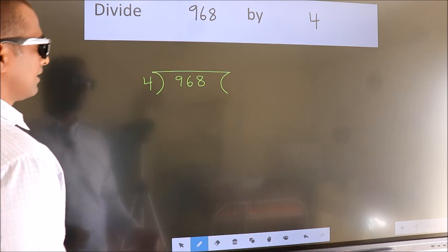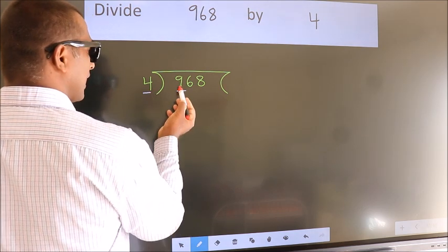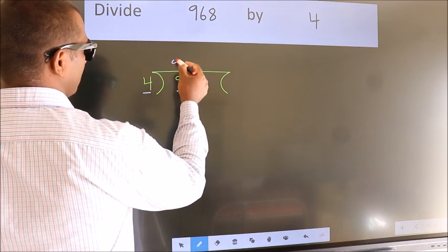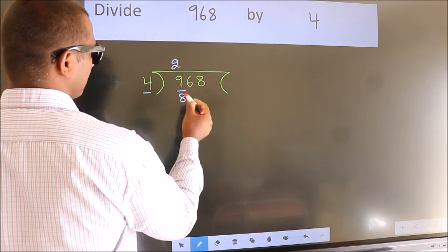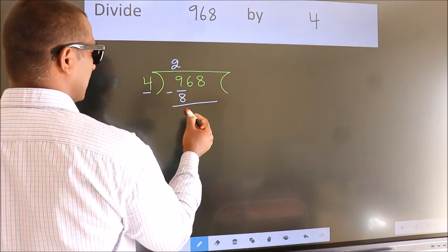Next. Here we have 9, here 4. A number close to 9 in 4 table is 4 twos, 8. Now, we should subtract. We get 1.